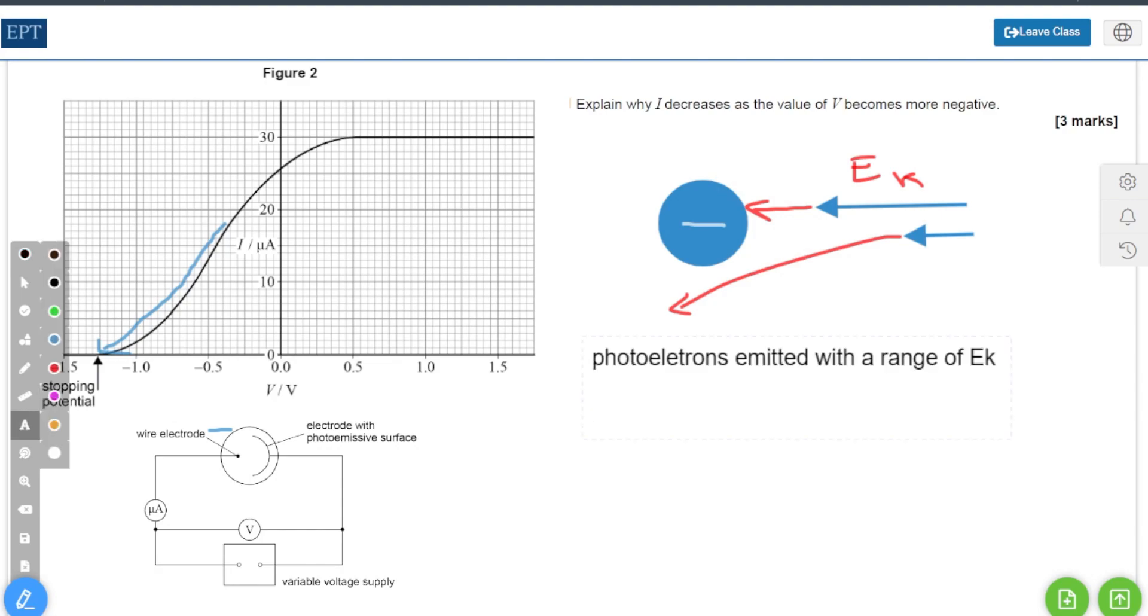Let's write this out like a mark scheme. Our first point would be to say that the photoelectrons are emitted with a range of kinetic energies. Our second point would be to mention the repulsive force between the electron and the negative electrode.